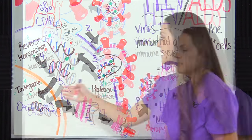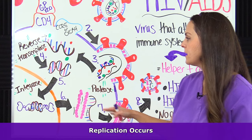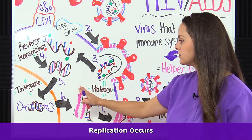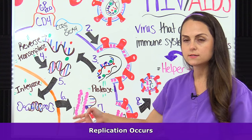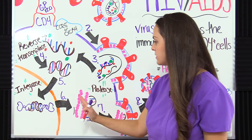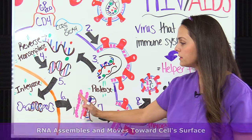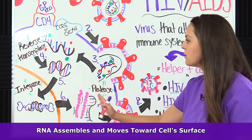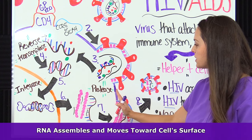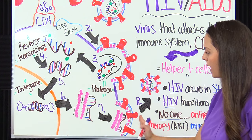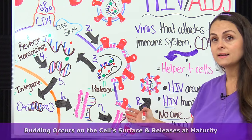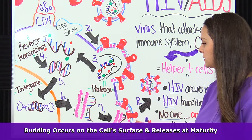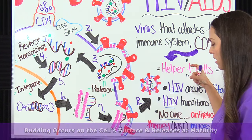The next step is replication. We have the creation of long protein chains and RNA. They start to become assembled — our next step — and move up toward the cell's surface because the virus needs to get out of the cell. It starts to grow outward, and that is budding. Once budding is complete, it pops off.